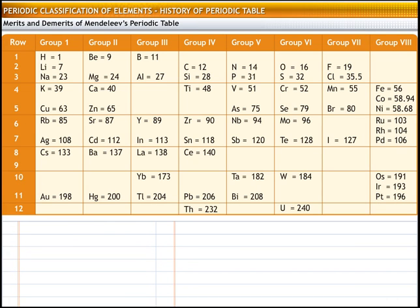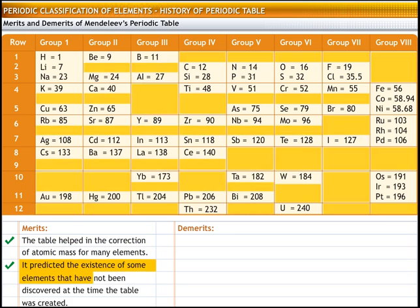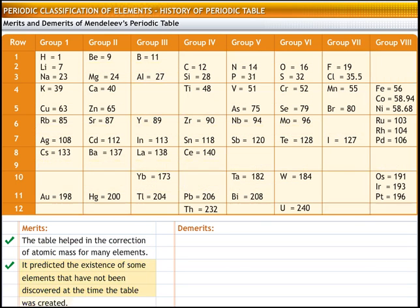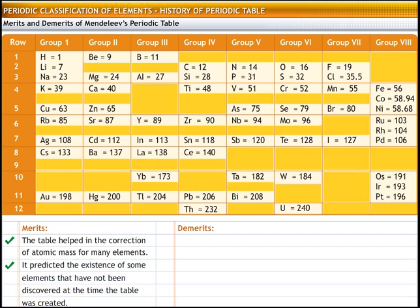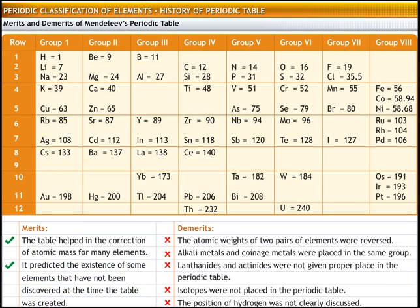Like other attempts at classification of elements, Mendeleev's periodic table also had some merits and demerits. The merits include: the table helped in the correction of atomic mass for many elements, and it predicted the existence of some elements that had not been discovered at the time the table was created. Because of its merits, the periodic table is widely accepted as a system of classification. However, it did not achieve complete success because of some demerits.